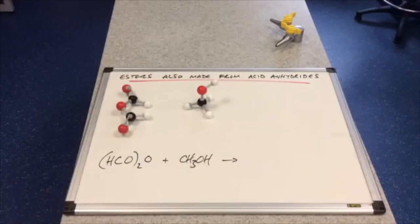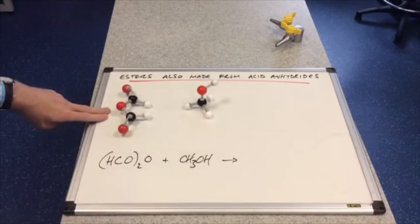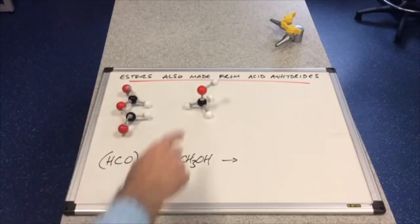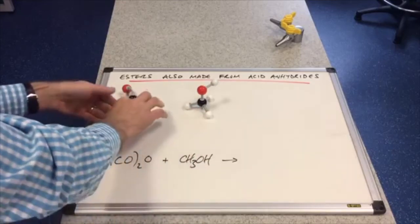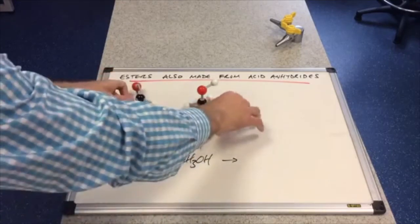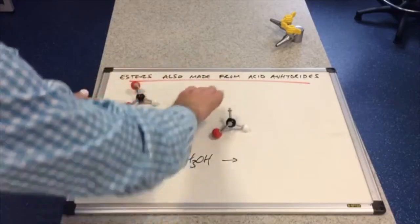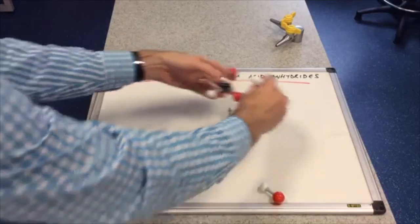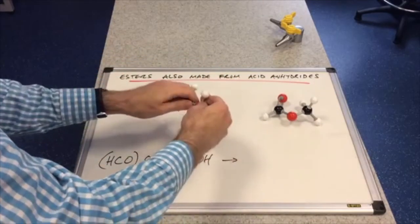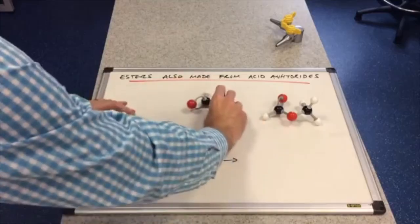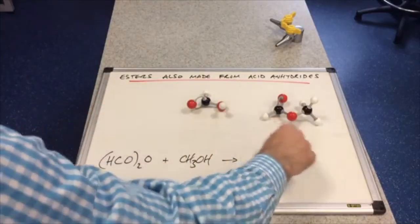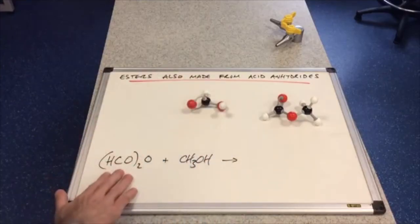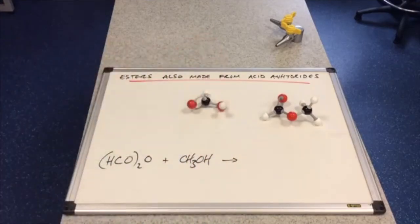And we'll do one more. So we've got this acid anhydride. So this is methanoic anhydride and methanol. So we'll do the same again. So this is obviously the ester. You can see the ester group there. And we're going to get carboxylic acid. So you can see the ester is methyl methanoate. And because it was methanoic anhydride, we get methanoic acid produced as well.